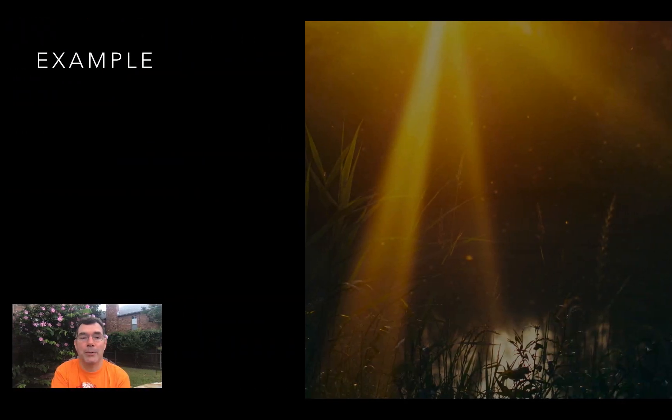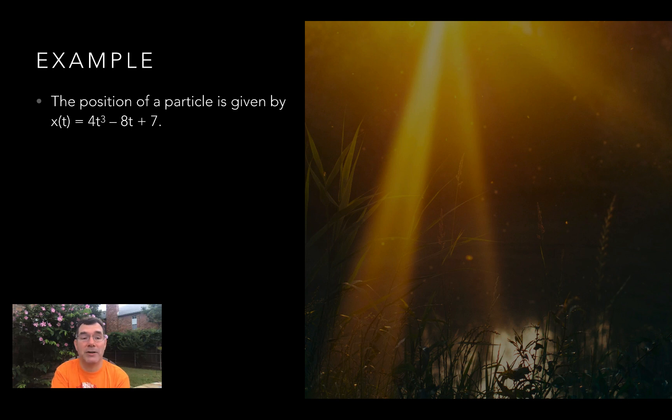Here's an example. Let's say I have the position of a particle, and it's given by this x function, which is 4t cubed minus 8t plus 7. If I wanted to find the average value for the position function from t equals 0 to t equals 5,